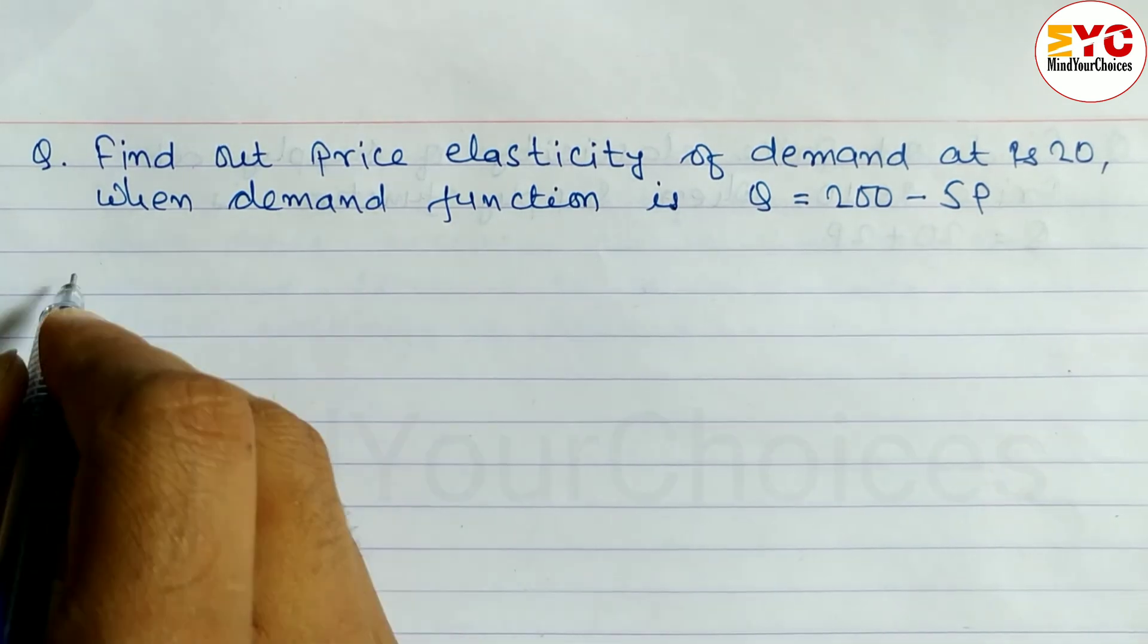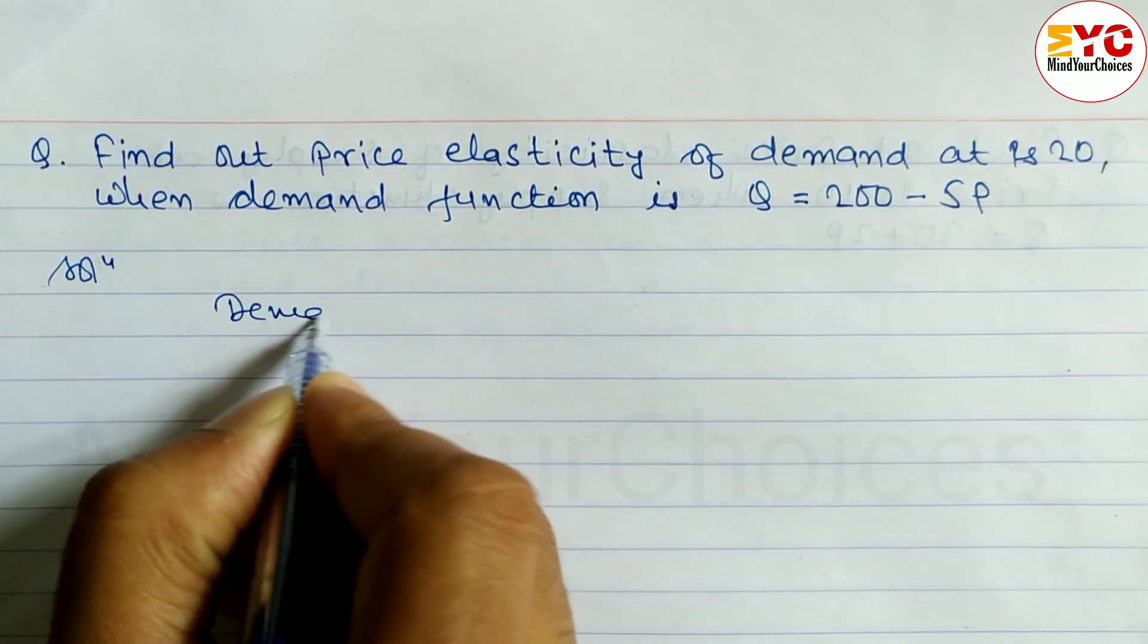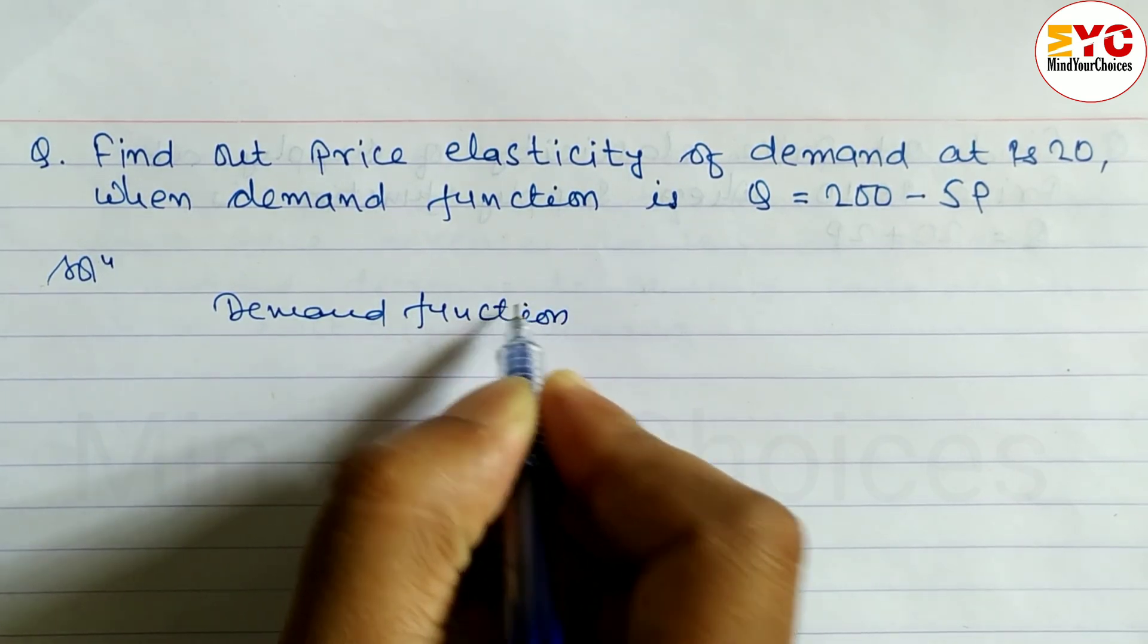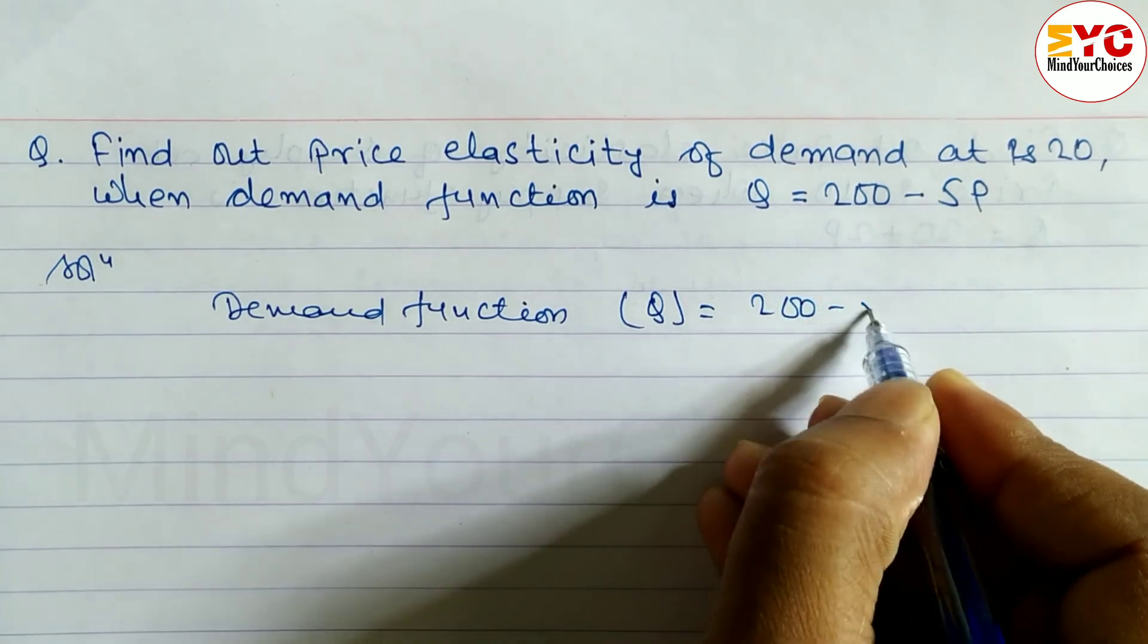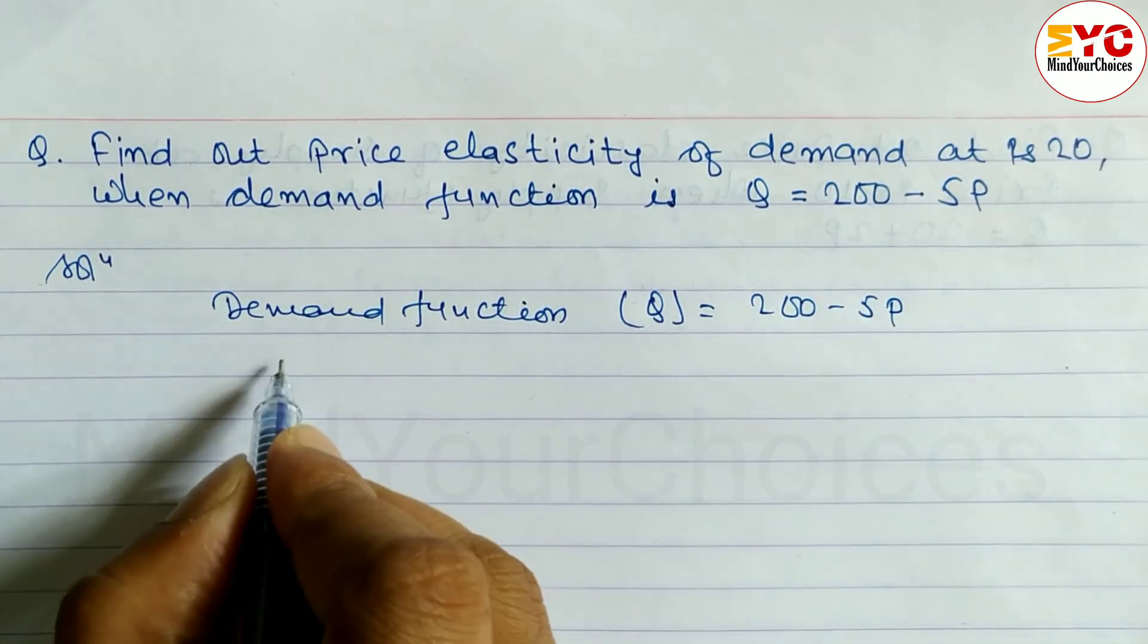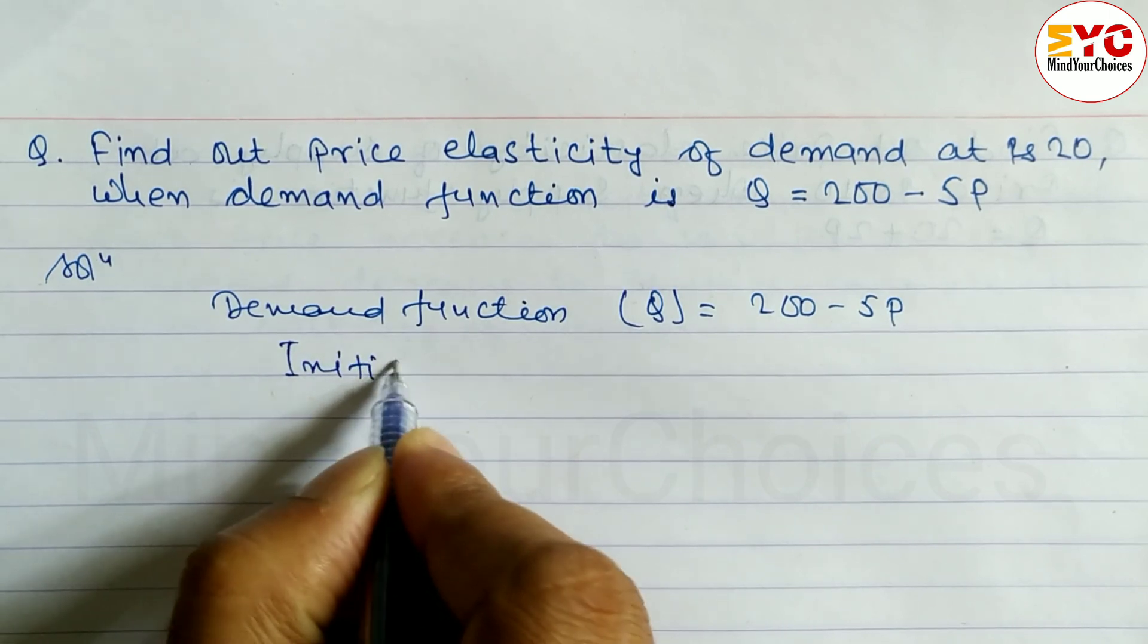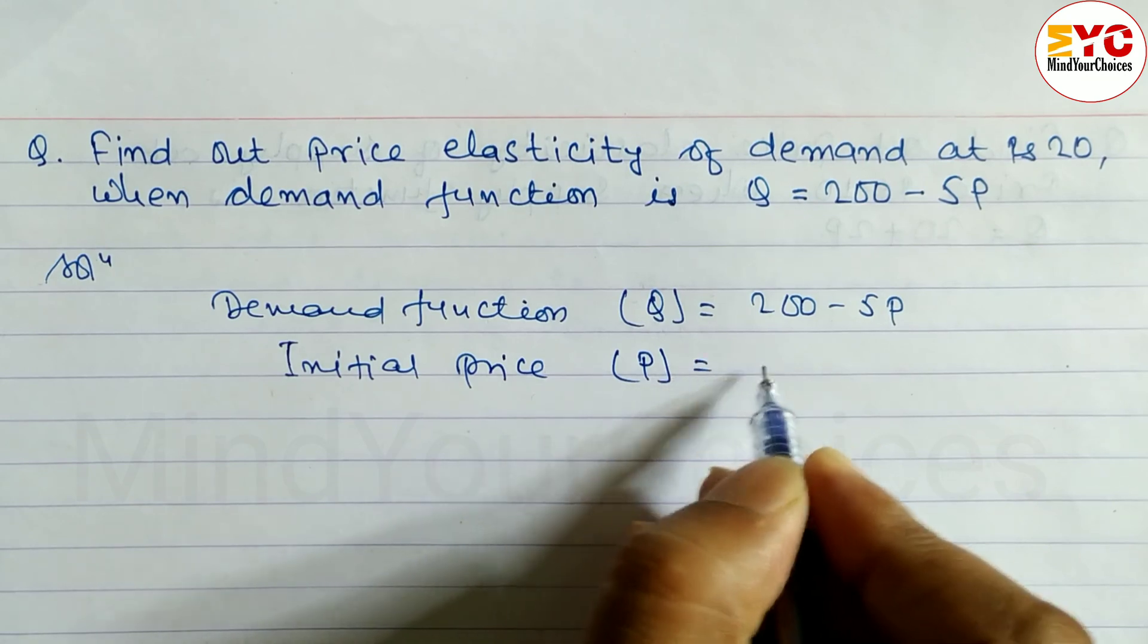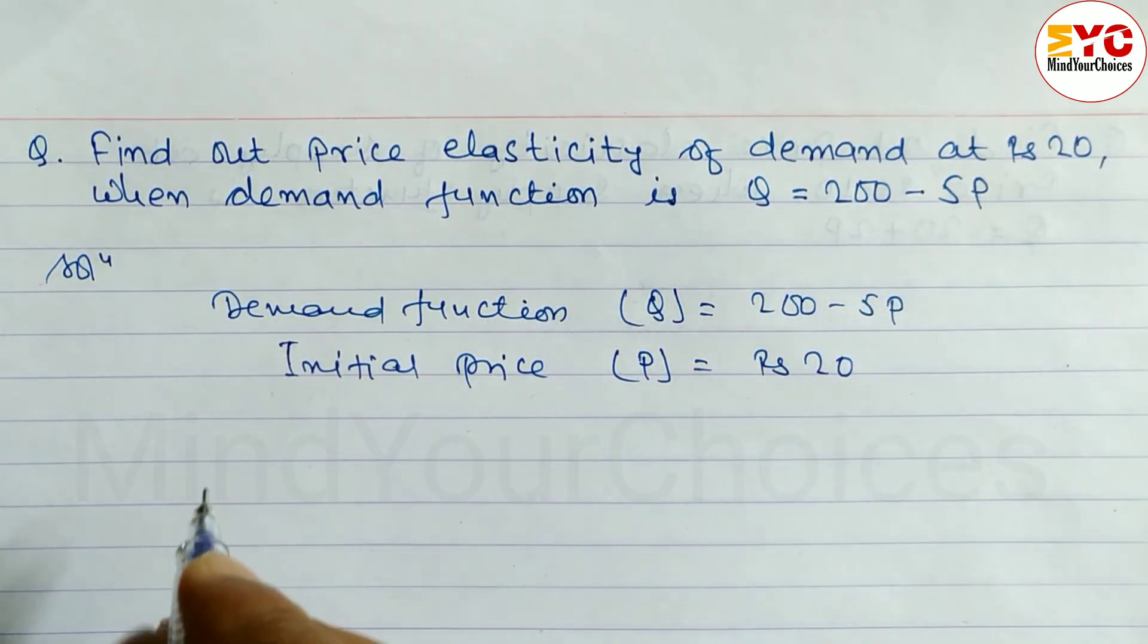So let's start. The demand function is Q equals 200 minus 5P. After that, the initial price P equals rupees 20.